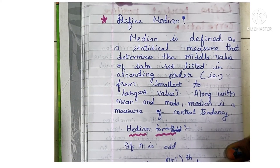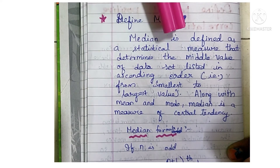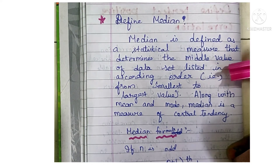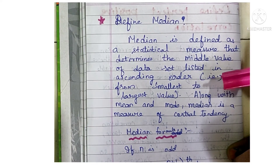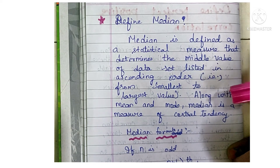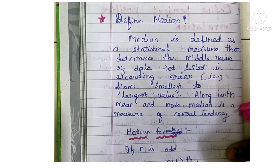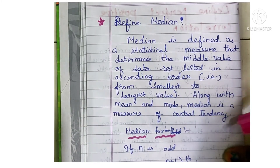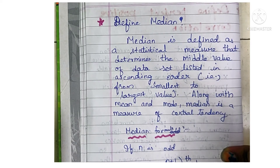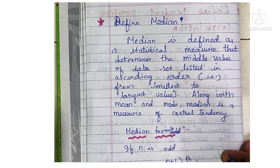The second question is: define median. Median is defined as a statistical measure that determines the middle value of a data set listed in ascending order — that is, the data should be arranged from the smallest to the largest value. Along with mean and mode, median is also a measure of central tendency. Median is the middle-most value of the given data after arranging it in ascending order.